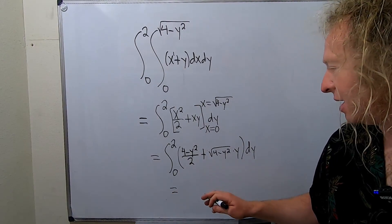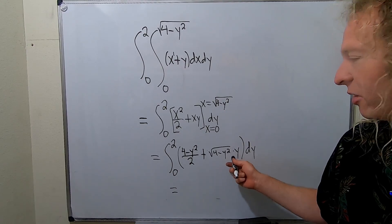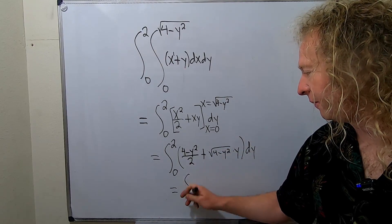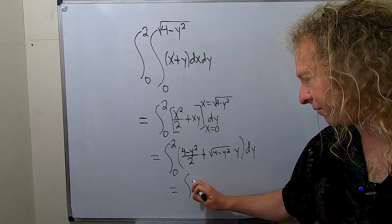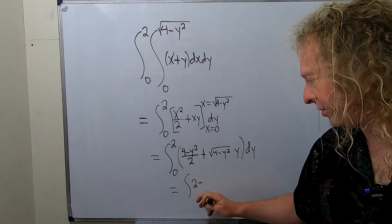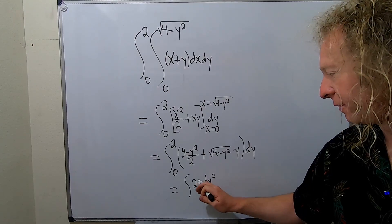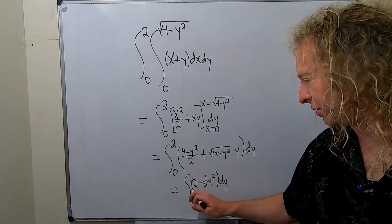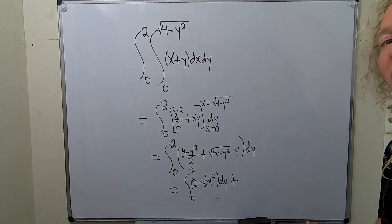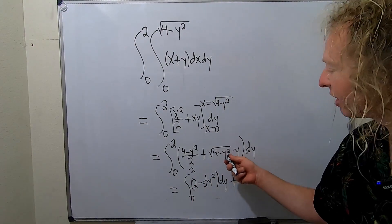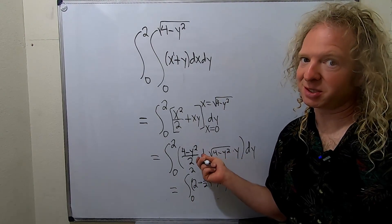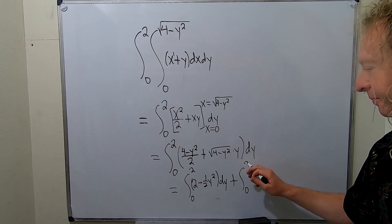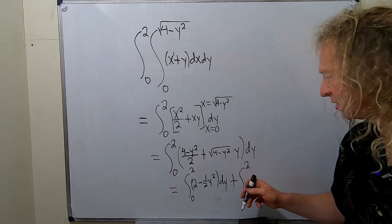Now we do have to integrate this, so let's break it up. This is going to require a u-substitution, so we'll split it: this part becomes 4 over 2, which is 2, minus one-half y squared, with dy going from 0 to 2, plus the other piece which requires a u-substitution.